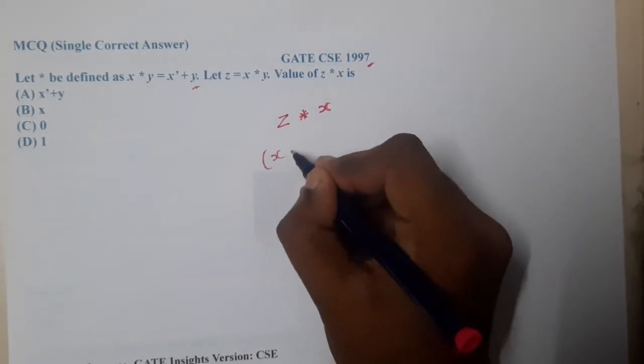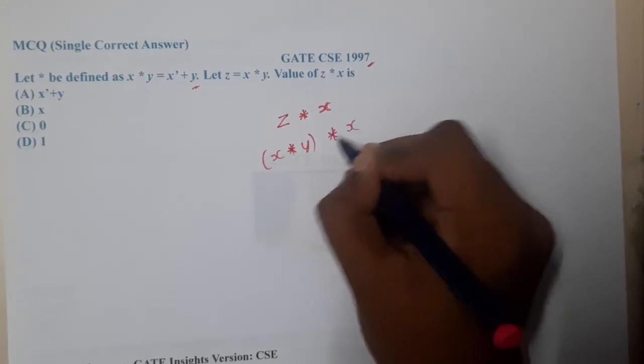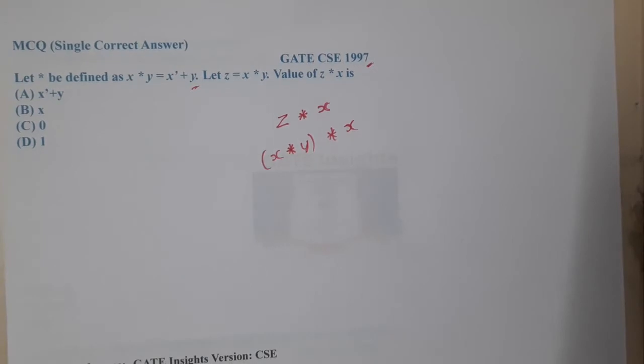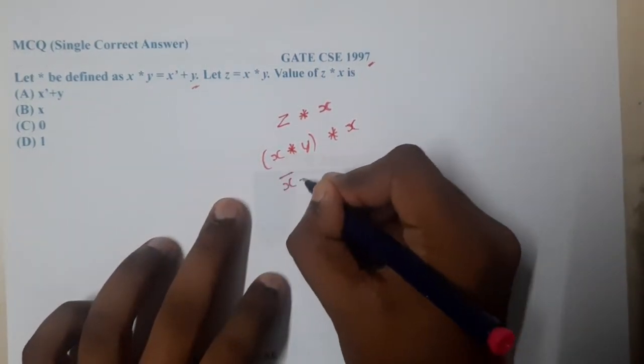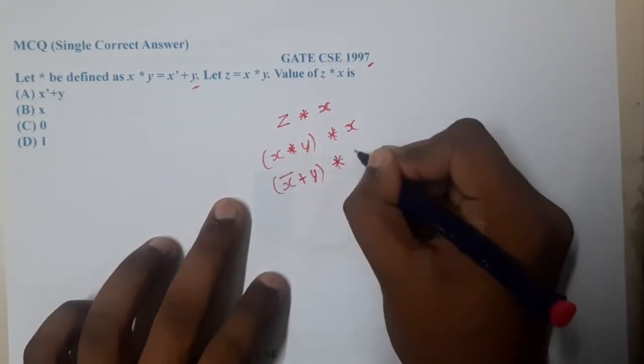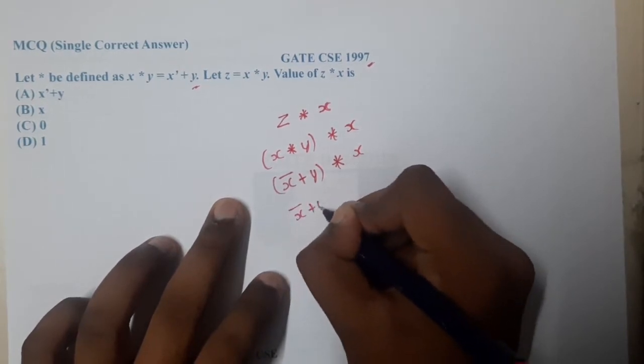What is z? z is nothing but x into y. So let us substitute this value. What exactly is x into y? It is nothing but x bar plus y into x. To convert this again, this will be complemented, so x bar plus y whole complement plus x.